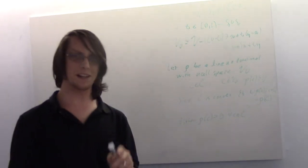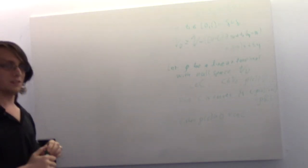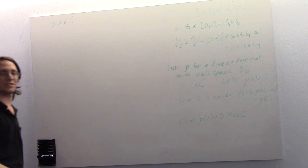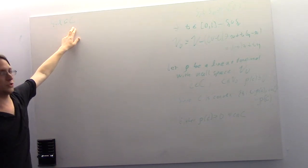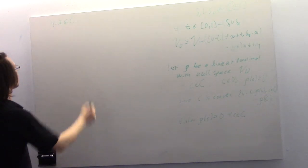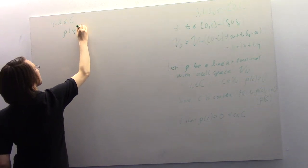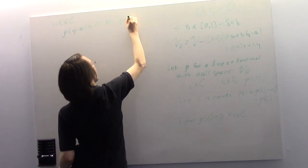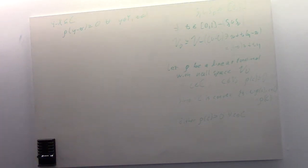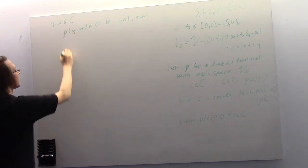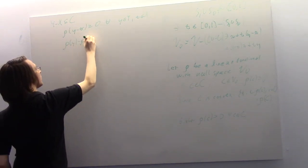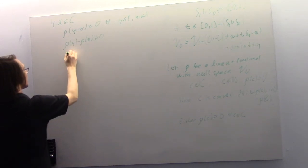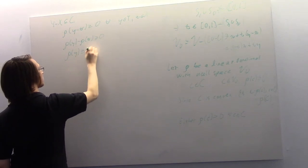Now let's remember what C was — it's been a while. C has the property that Y minus X is contained in C. Really, C is our tool to discuss Y minus X. So rho of (Y minus X) is greater than or equal to zero for all y in Y and all x in X. Since rho is a linear functional, rho(Y) minus rho(X) is greater than or equal to zero, meaning rho(Y) is greater than or equal to rho(X).